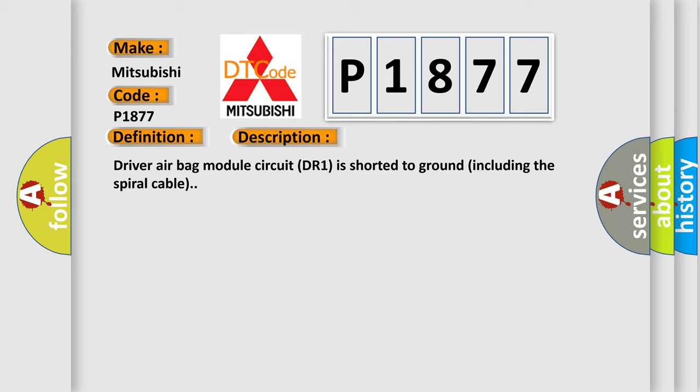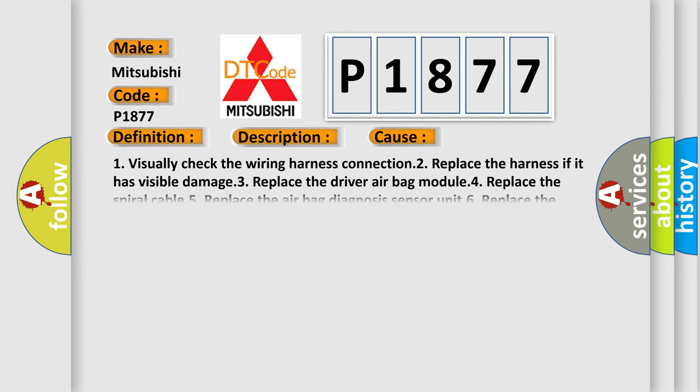This diagnostic error occurs most often in these cases: 1. Visually check the wiring harness connection. 2. Replace the harness if it has visible damage. 3. Replace the driver airbag module. 4. Replace the spiral cable. 5. Replace the airbag diagnosis sensor unit. 6. Replace the related harness.